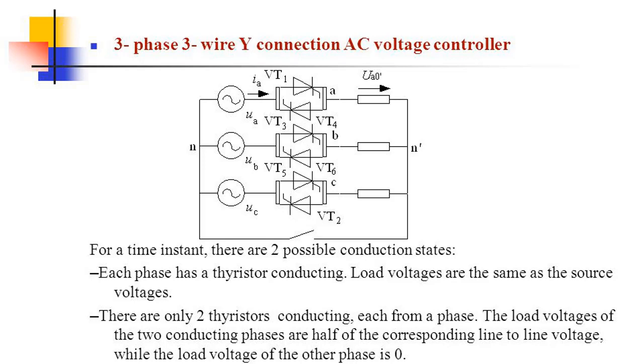There are only two thyristors conducting, each from a phase. The load voltages of the two conducting phases are half of the corresponding line-to-line voltage, while the load voltage of the other phase is zero.